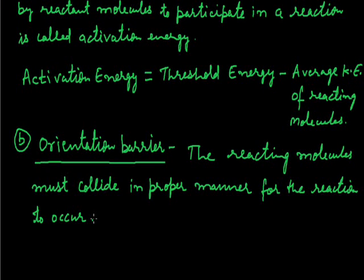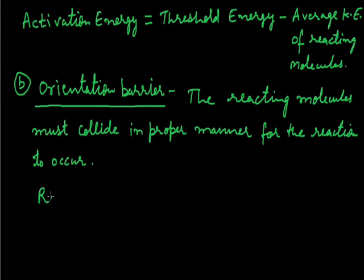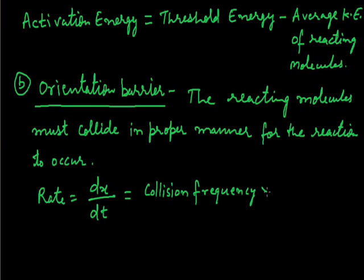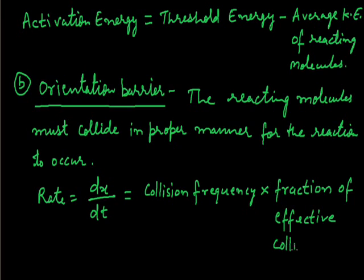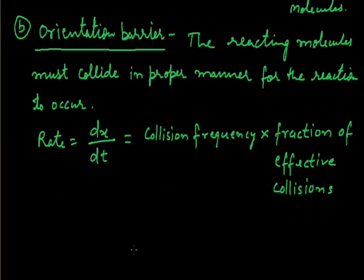Rate of reaction is directly proportional to the number of effective collisions. That is, rate is equal to dx upon dt, that is equal to collision frequency multiplied by fraction of effective collisions, that is equal to Z into f.